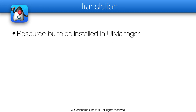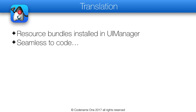Translation is the first thing we encounter in localization tasks and probably the most important aspect. Codename One makes translation seamless. You can just install a resource bundle into the UI manager. A resource bundle is a set of key-value pairs, so the key would be a string in English and the value would be the same string in a different language. This gets translated seamlessly, so if you set the key from the bundle as the text to the label, that label will be seamlessly localized.